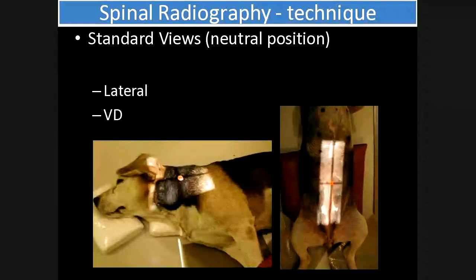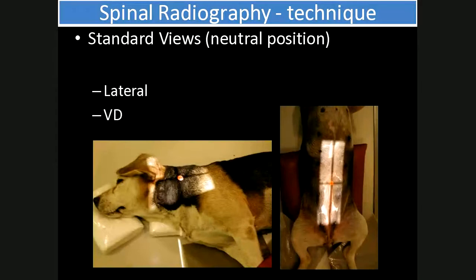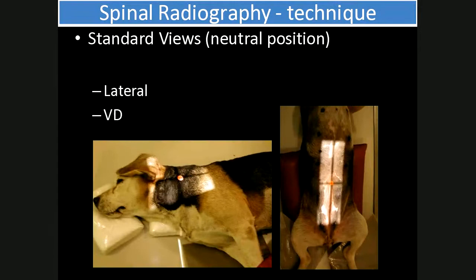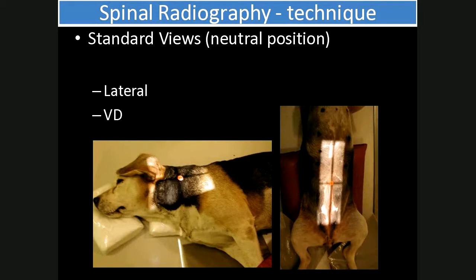The two standard views for neutral position of the spine are the lateral view and the VD. Centering is usually done over an identifiable lesion. Otherwise, if no localizing signs are present, survey radiographs are taken centered over the mid-cervical region, the mid-thoracic region, the thoracolumbar junction, the mid-lumbar area, and the lumbosacral junction. On correct terminology: a right lateral means the patient is lying on their right side. So technically it would be a left-to-right lateral — the beam enters the left side and exits the right — but we shorten it to 'right lateral' for convenience.